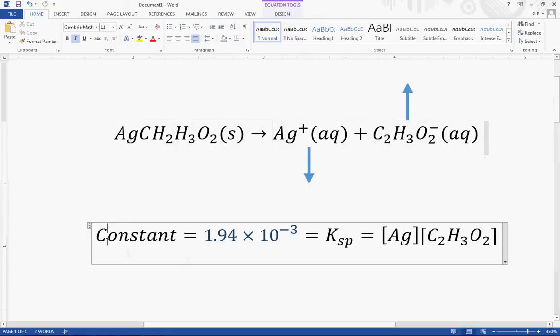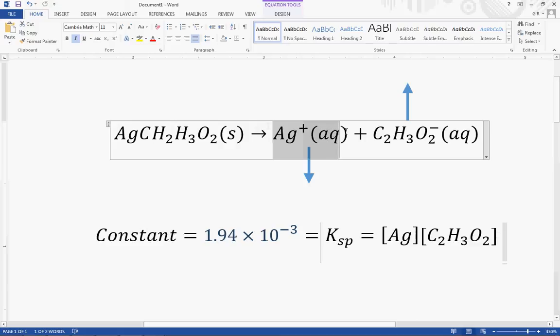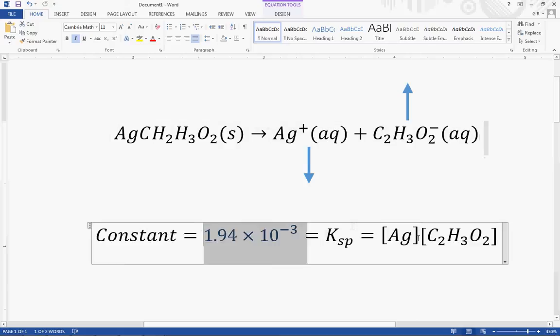And let's remember that this is always a constant, so you can't really change the values of this. So if you add more silver, you have to decrease the acetate because this is always going to be a constant.